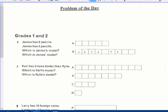Which is Janice's model? One, two, three, four, five, six, seven, eight, nine. This is Janice's model, correct? And which is James? This is James' model because there's five of them.